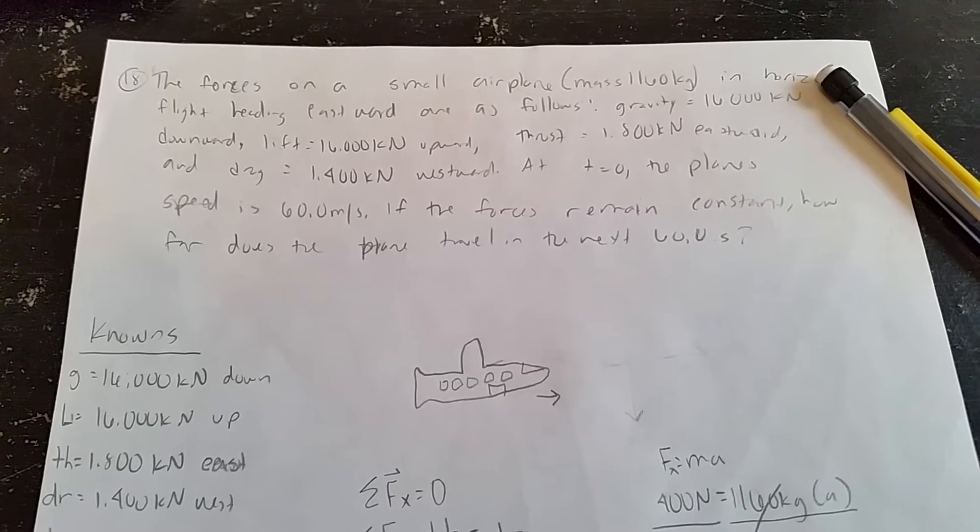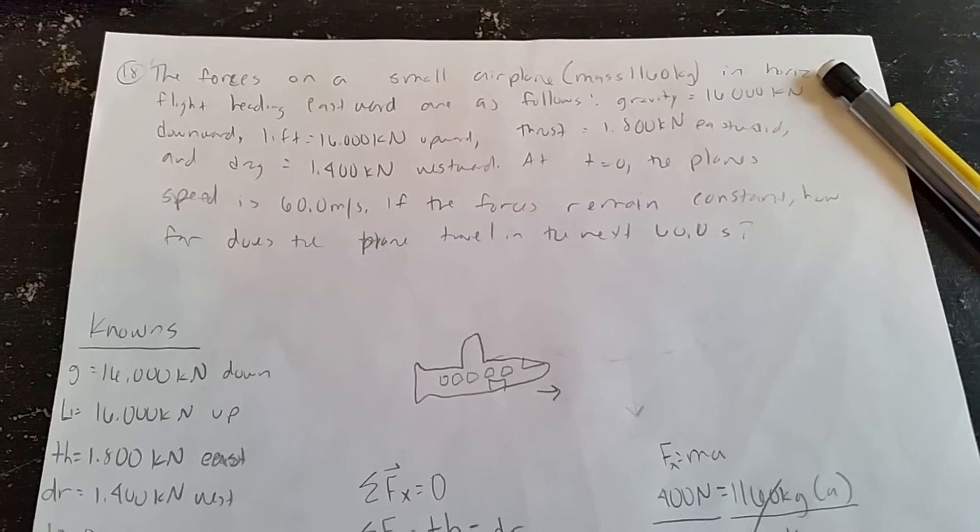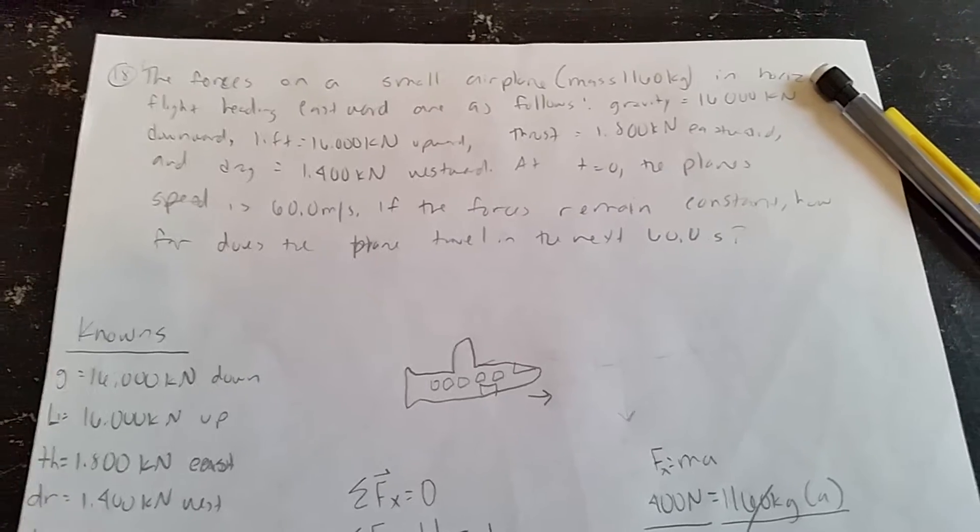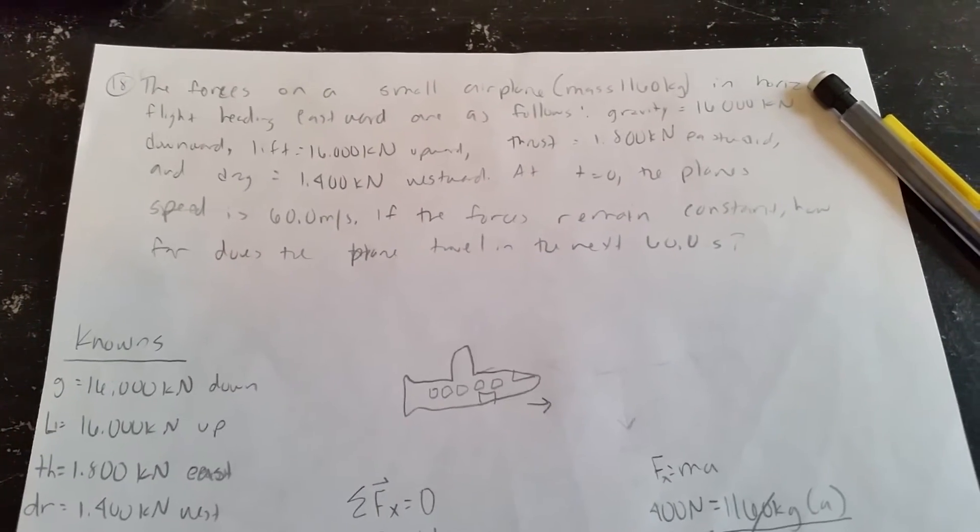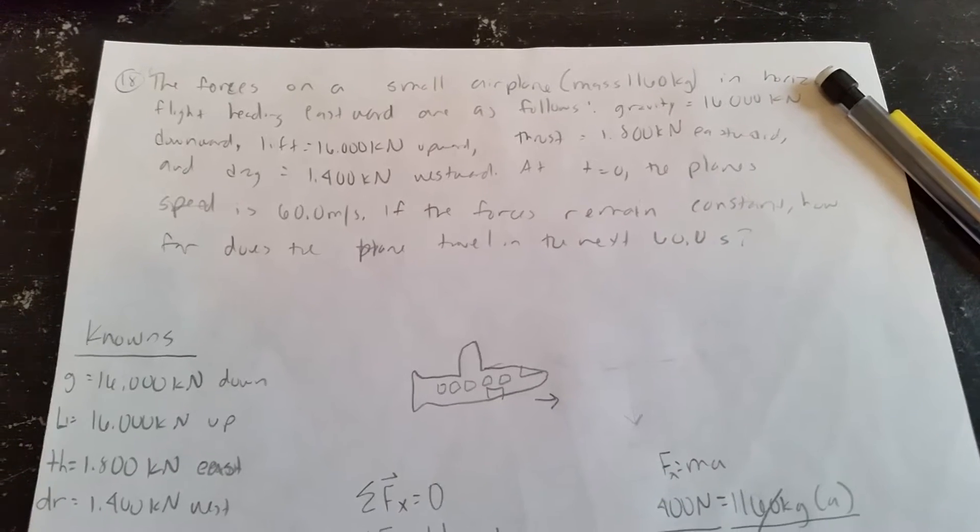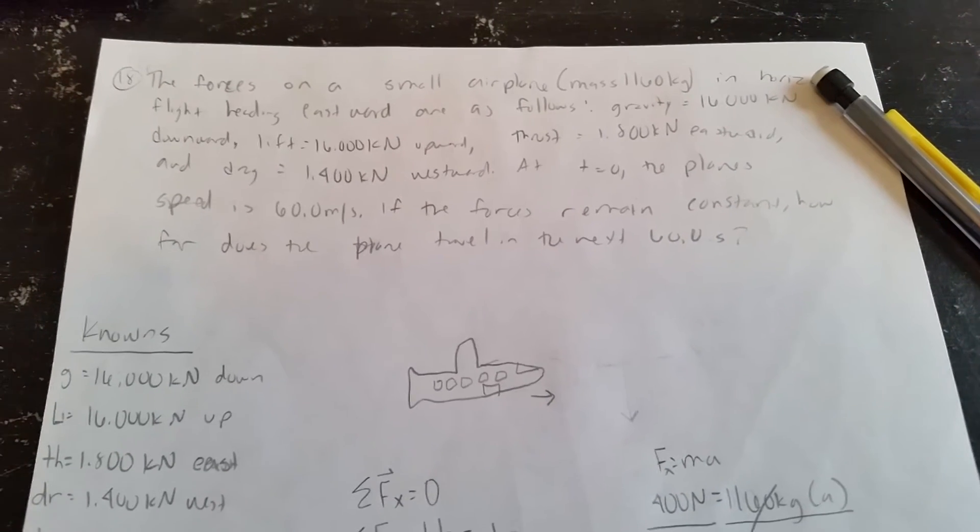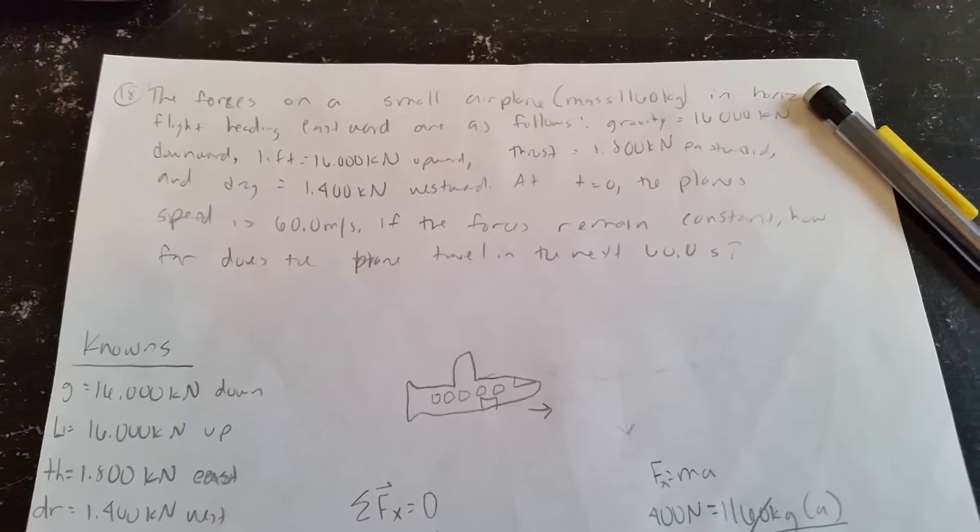Gravity is 16.000 kilonewtons downward, lift is 16.000 kilonewtons upward, thrust is 1.800 kilonewtons eastward, and drag is 1.400 kilonewtons westward at a time of zero.